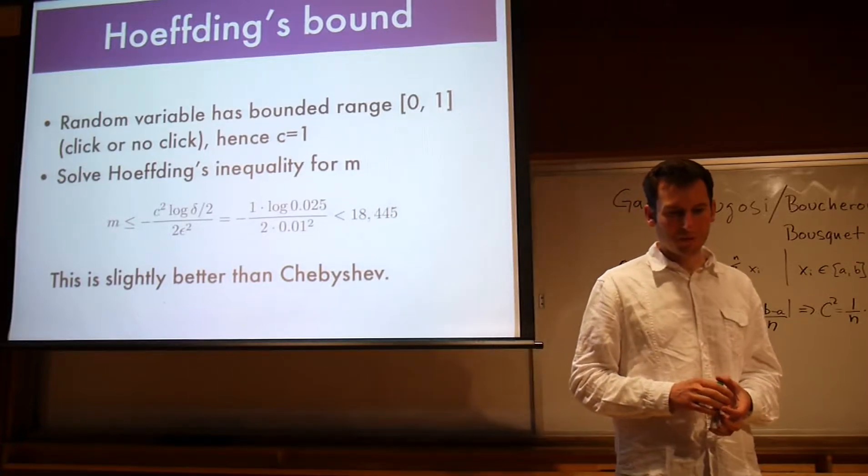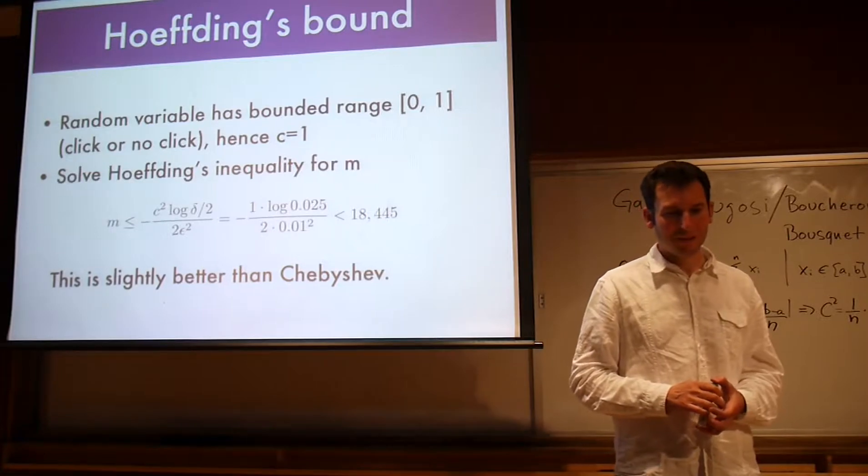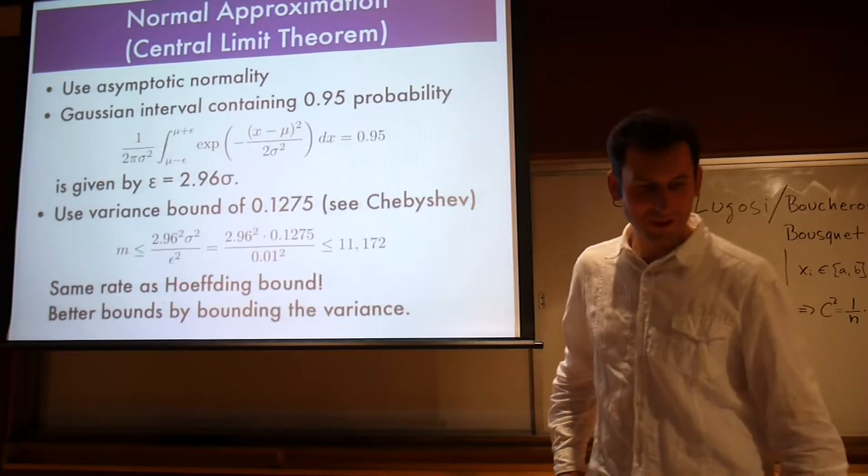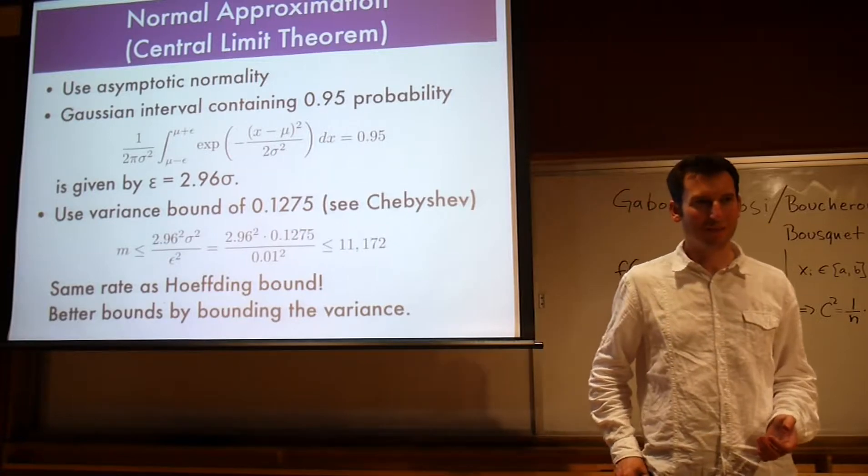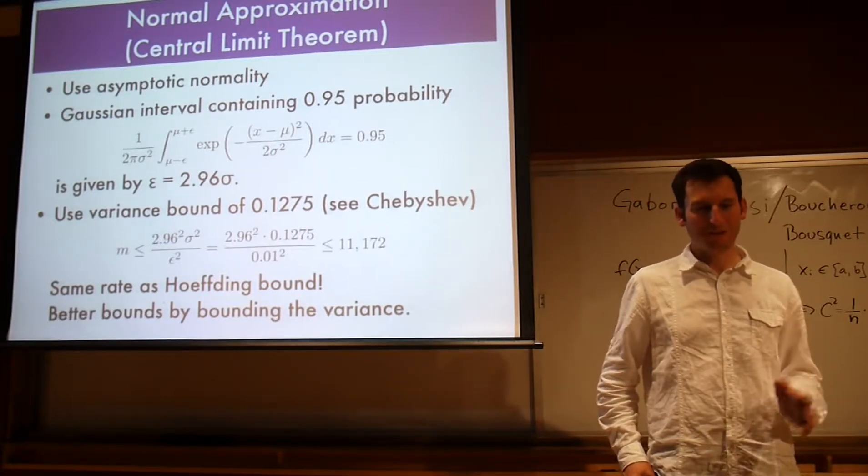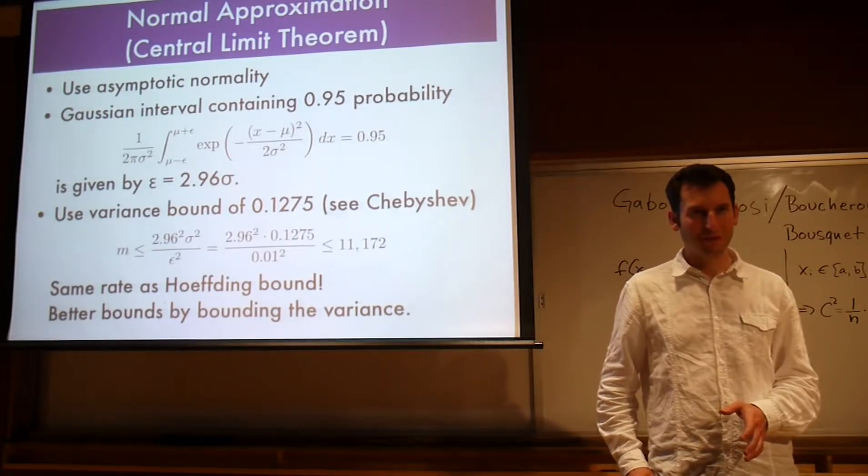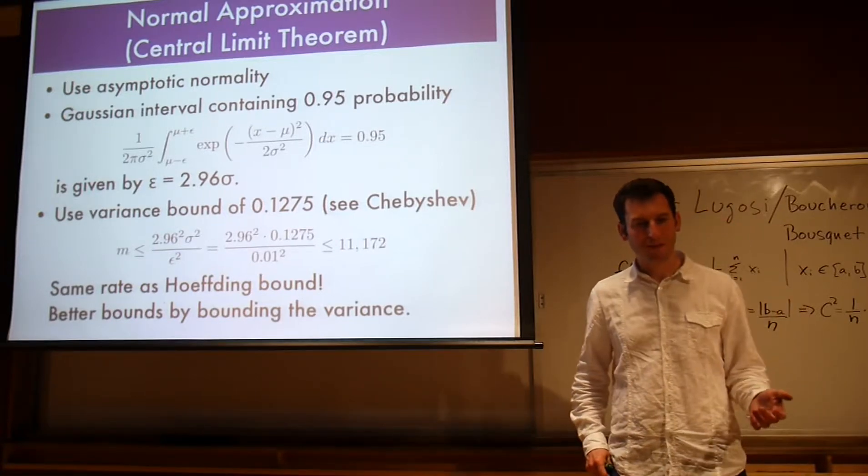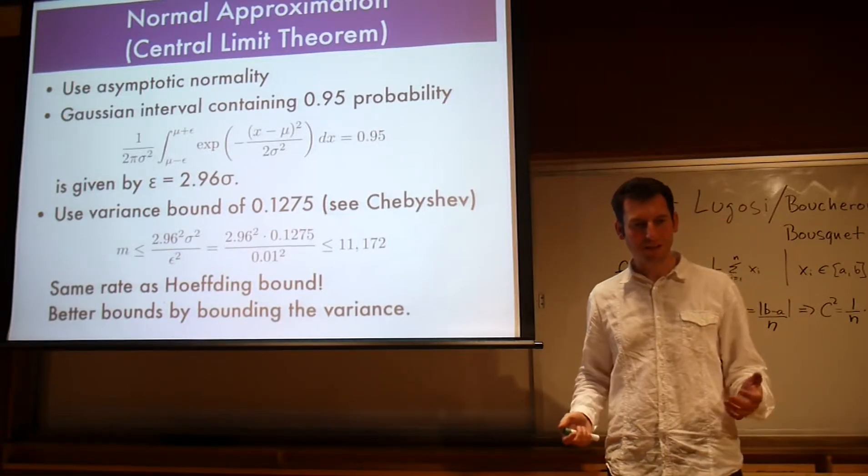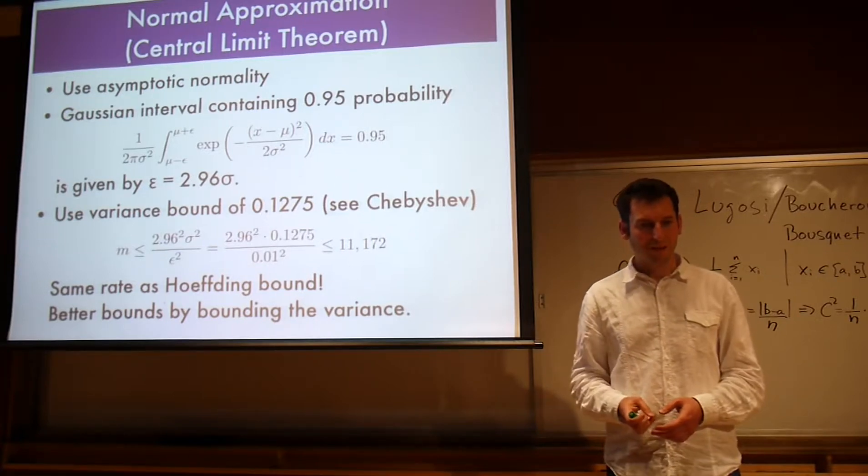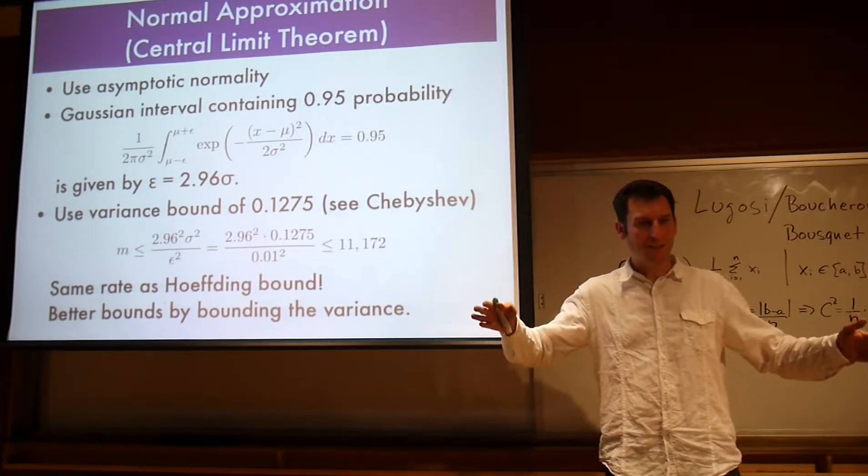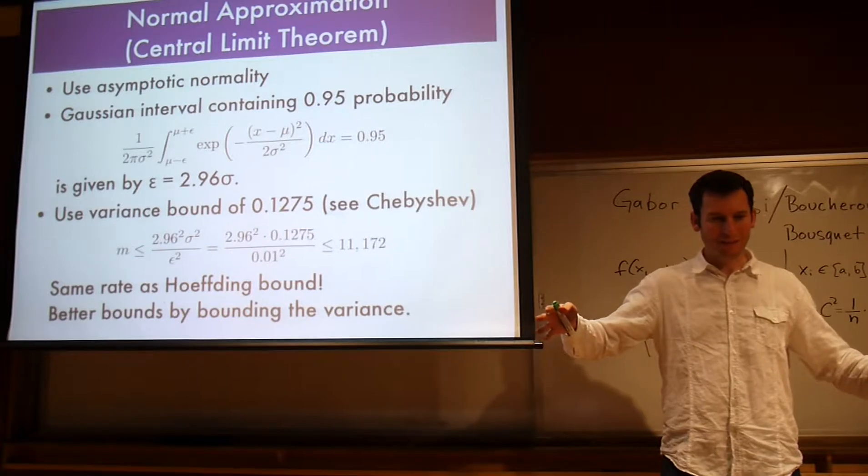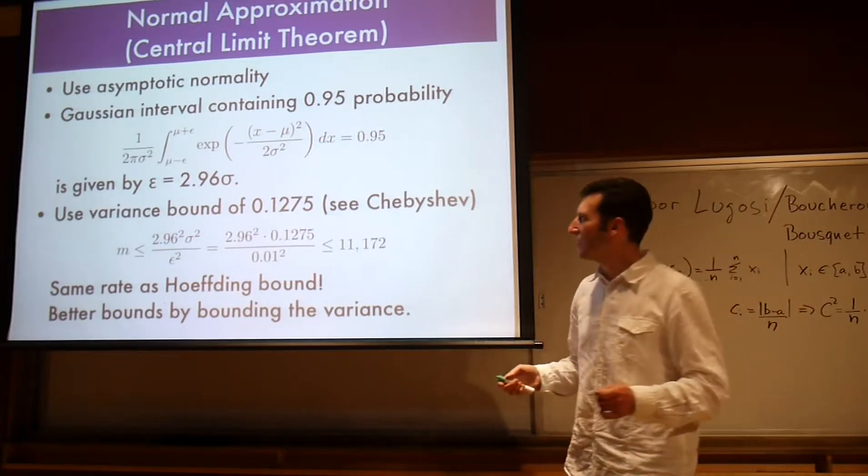Now what can we do even better than that? I could basically throw all the caution to the wind and make a normal approximation. This is an approximation, it's not a bound anymore. But it may be good enough. I'm just exploiting the fact that I'll have asymptotic normality. Then I look at the Gaussian interval containing 0.95 probability.